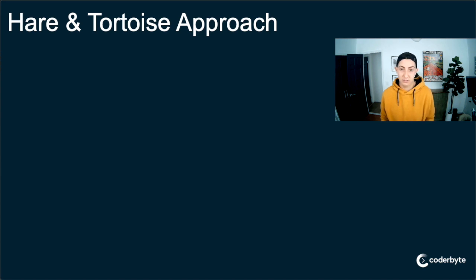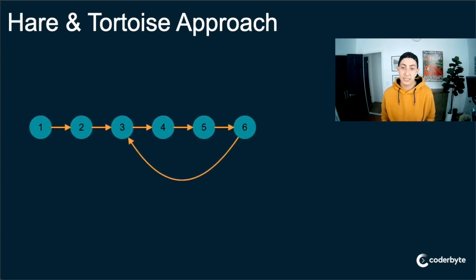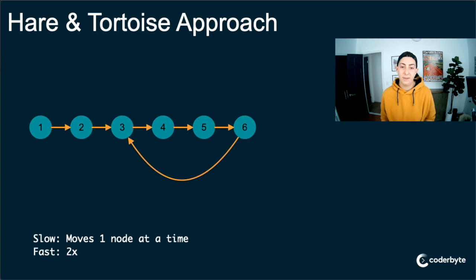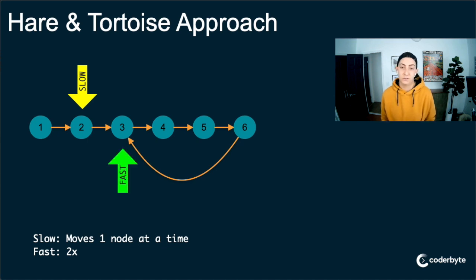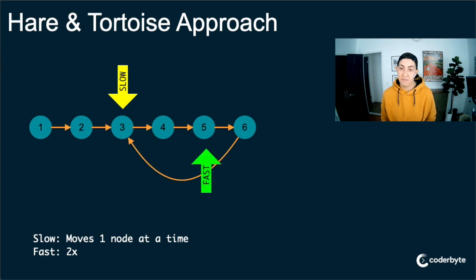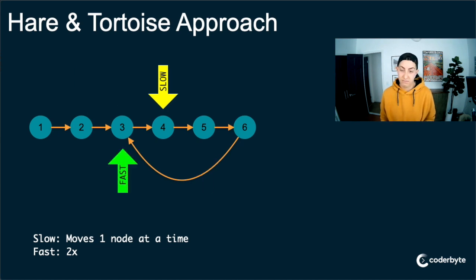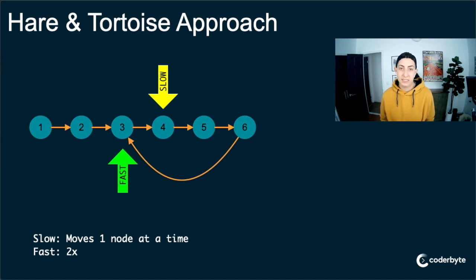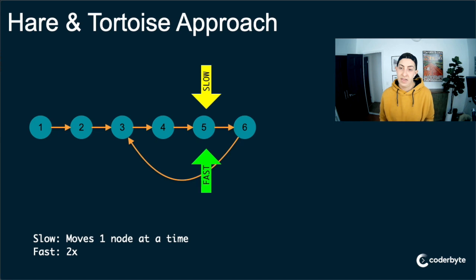Let's look at this algorithm with some visualization — we'll see the pointers in action. Here's our linked list, same from the other slides, and it has a cycle. We have a slow pointer moving one node at a time and a fast pointer moving two nodes at a time. We've initialized them both at the head. First iteration: slow moves one, fast moves two. Second iteration: same thing. Third iteration — they're caught in the cycle now, and the fast pointer is one behind the slow pointer. That's the first scenario from the previous slide. So in the next iteration, they're going to meet — and that's when we can say there's a cycle. And there we have it.